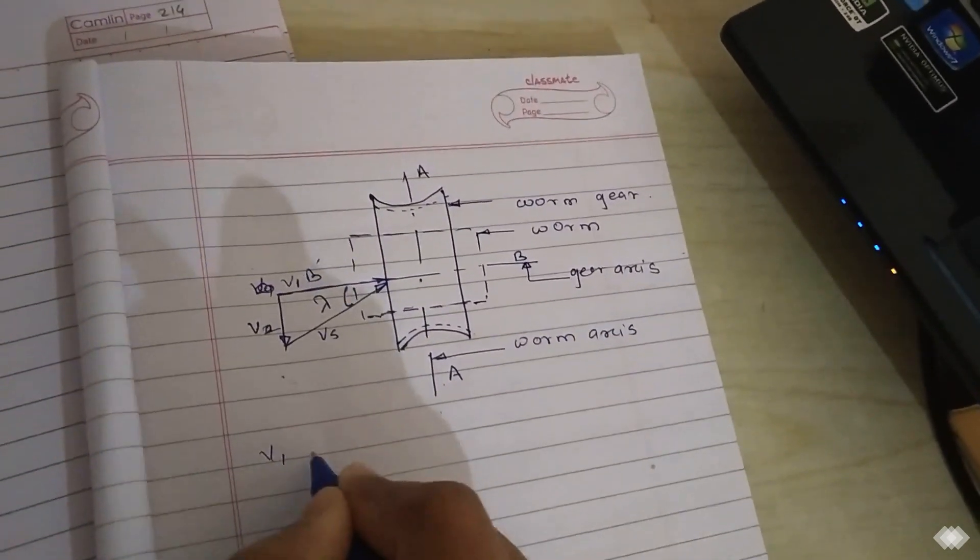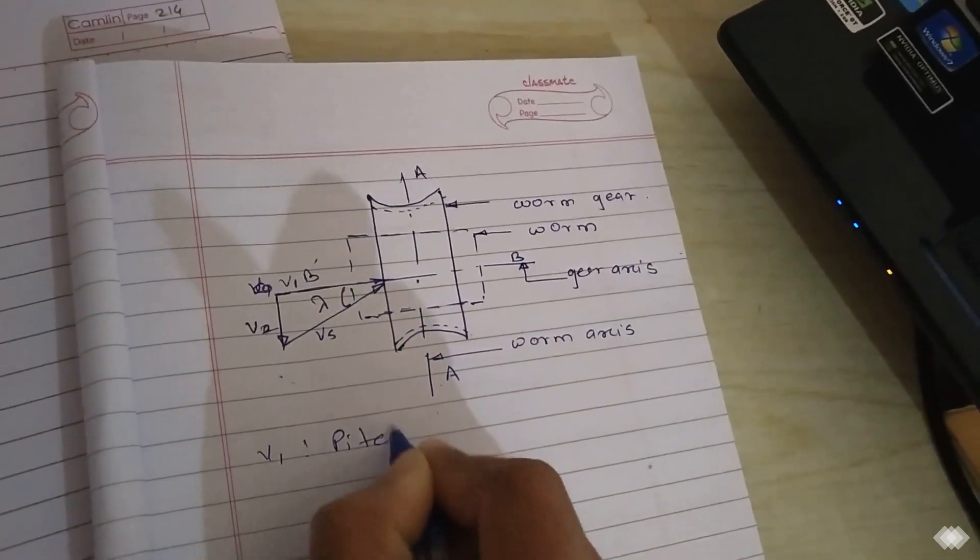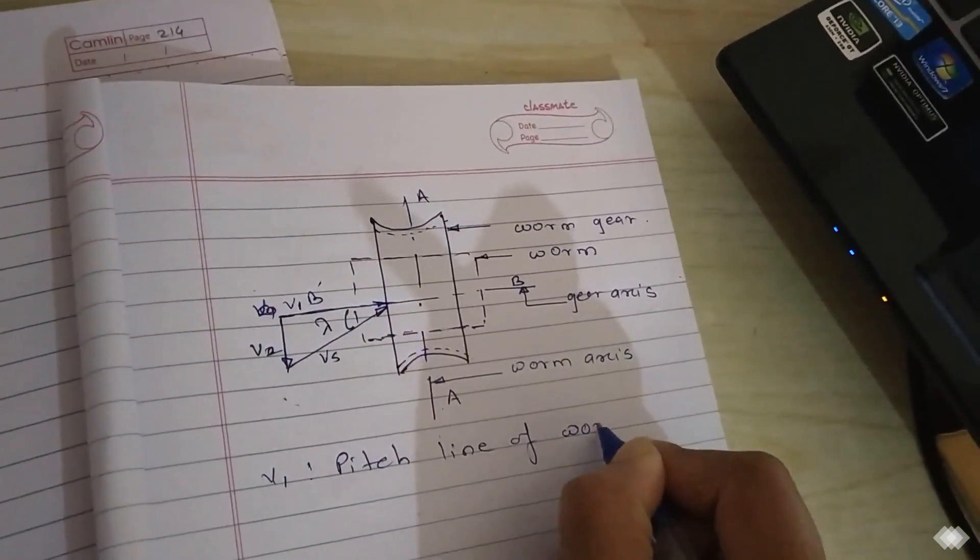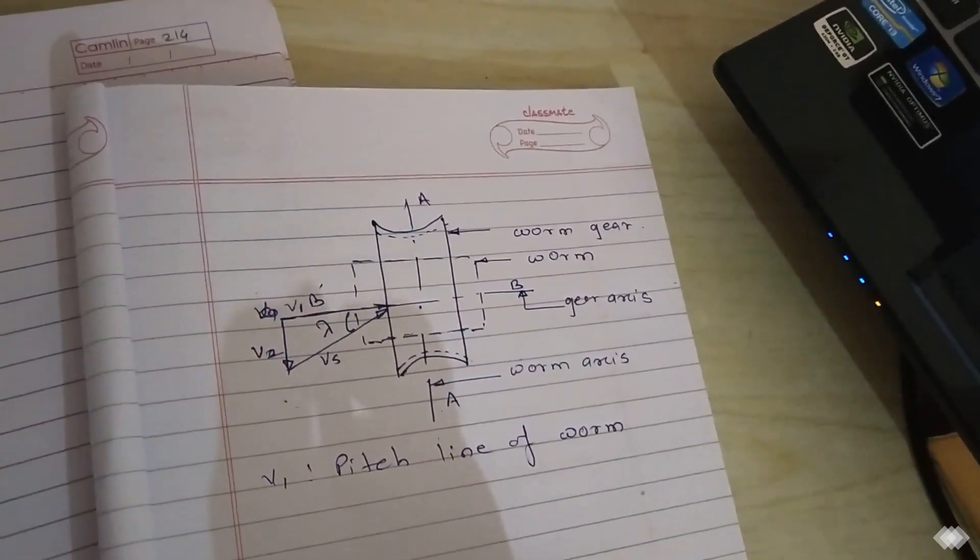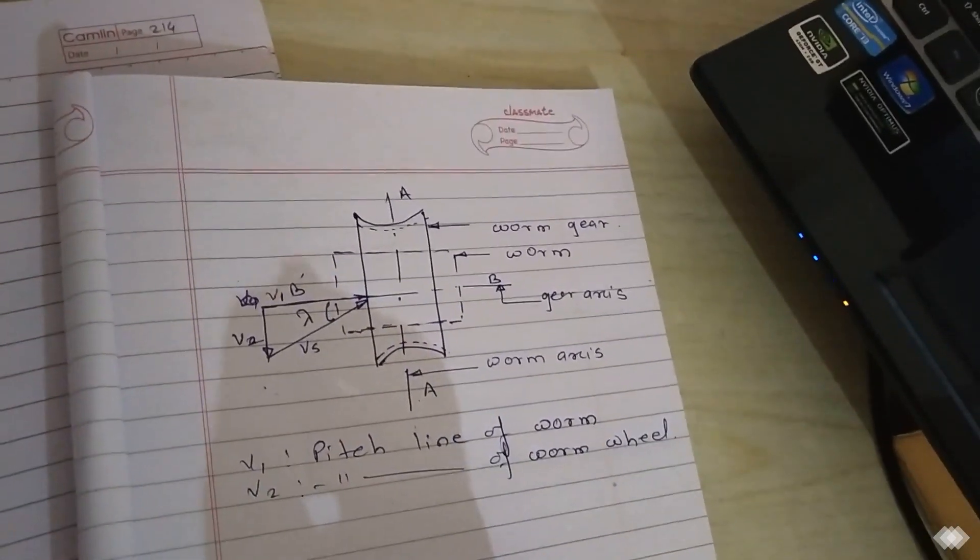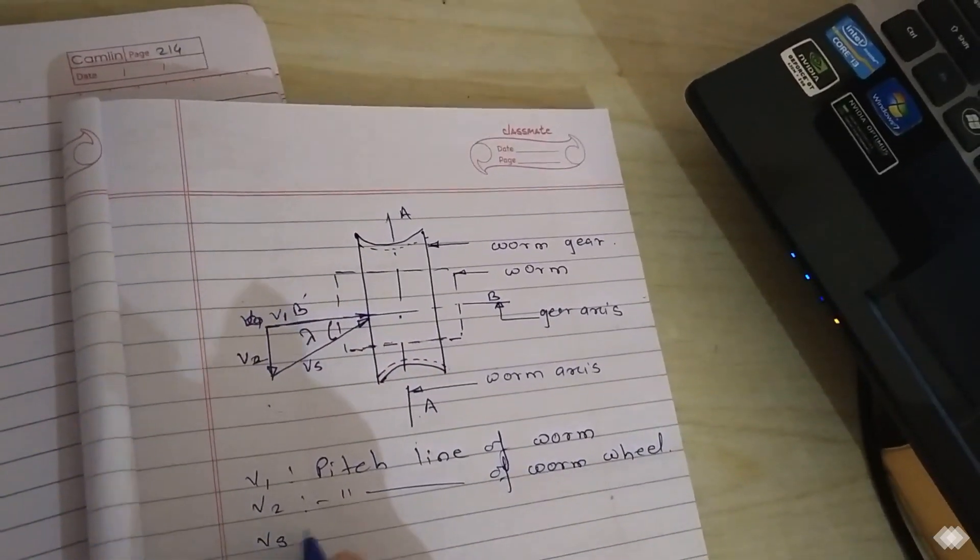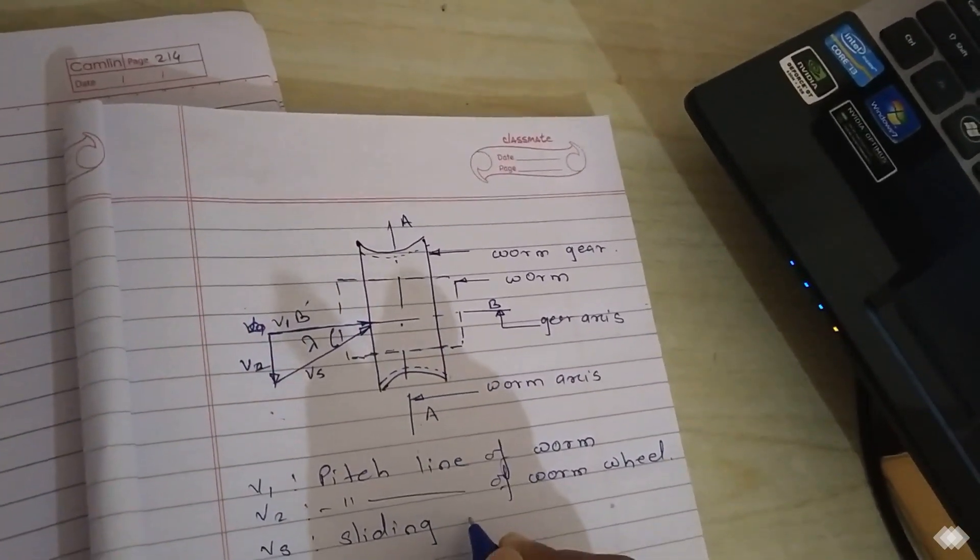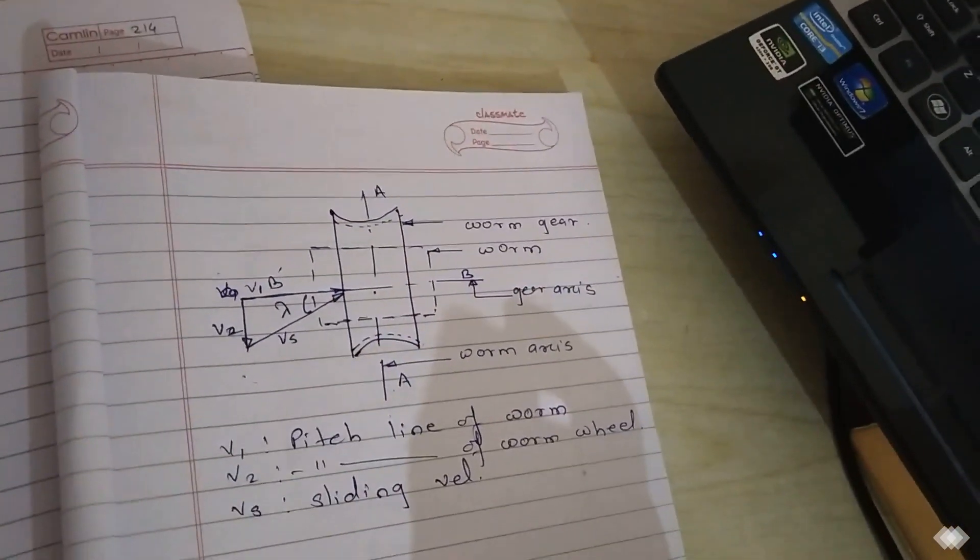Here V1 is pitch line velocity of worm. Similarly V2 is pitch line velocity of the gear. And VS is the sliding velocity or rubbing velocity between the worm and worm gear.